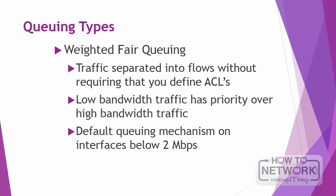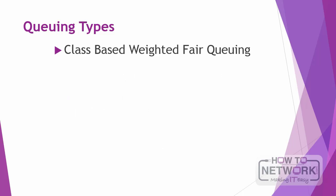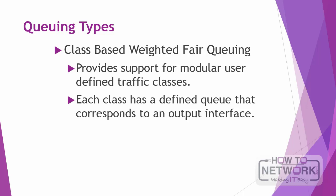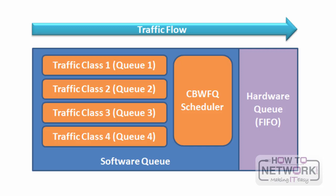Next is class-based weighted fair queuing, which extends WFQ capabilities by providing support for modular, user-defined traffic classes. It lets you define traffic classes that correspond to match criteria including ACLs, protocols, and input interfaces. Traffic that matches the class criteria belongs to that specific class, and each class has a defined queue corresponding to an output interface. After traffic is matched to a class, you can modify its characteristics such as assigning bandwidth, maximum queue limit, and weight.